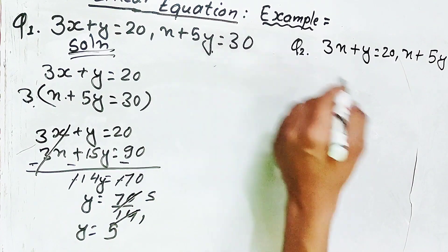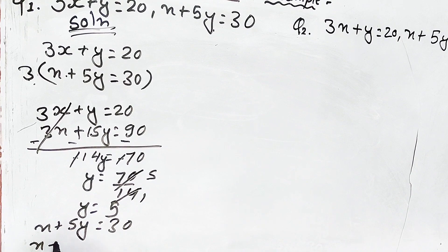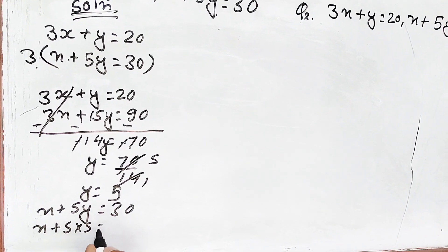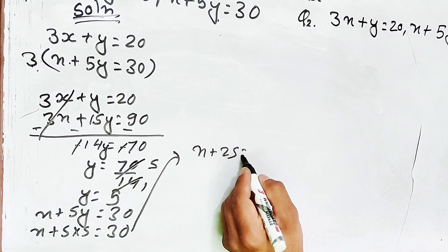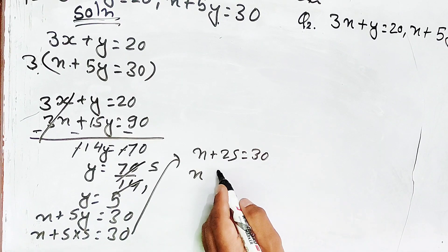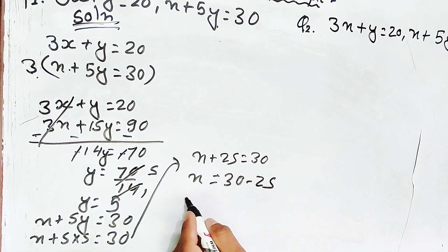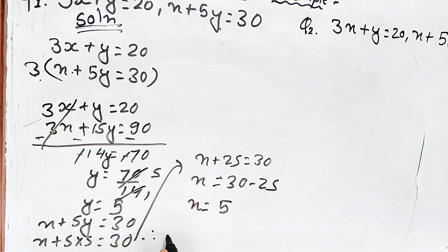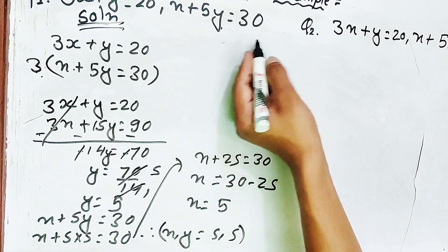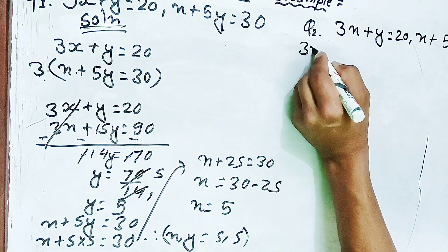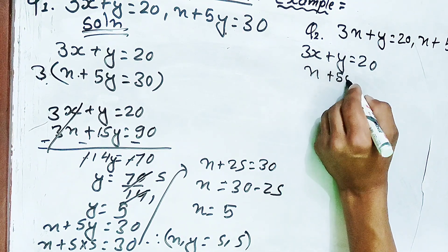Now substituting back: x plus 5y is equal to 30. With y equal to 5, x plus 25 is equal to 30, so x is equal to 5. Therefore x equals 5 and y equals 5. The question is 3x plus y equal to 20 and x plus 5y equal to 30.